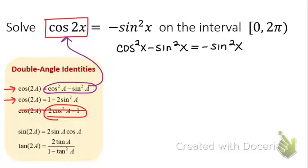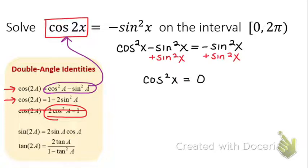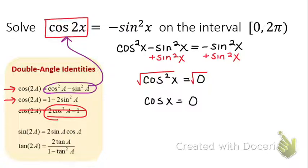Now we need to solve this. When I add sine²x to both sides, it cancels out, leaving cosine²x equals 0. Eliminate the exponent by taking the square root — the square root of 0 is 0 — so cosine x equals 0. When you take a square root you usually include plus and minus, but there's no such thing as plus or minus zero. Now take the inverse cosine and find all angles with cosine of 0.